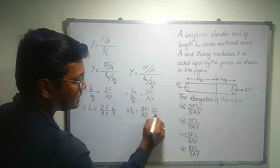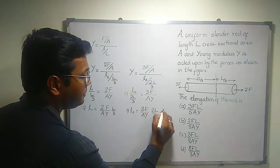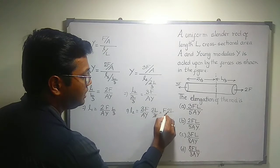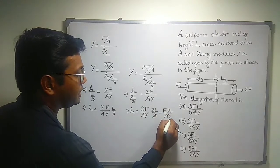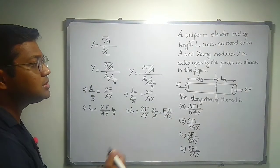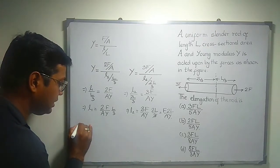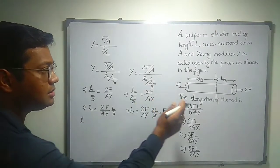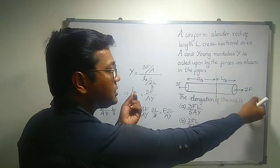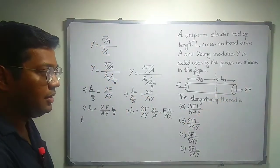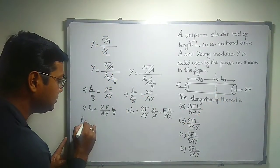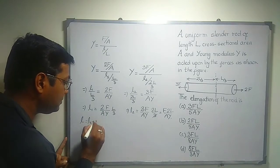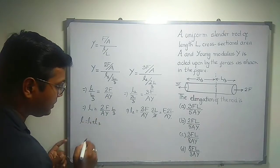These 3 and these 3 cancel out, so it becomes 2FL divided by AY. What is the total elongation? Let us consider the total elongation here by stretching it on both sides. It is small L. So small L is equal to sum of L1 plus L2.